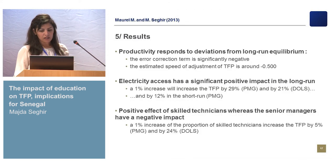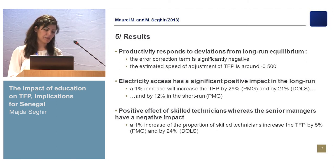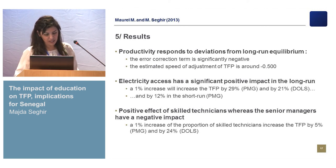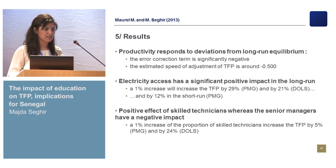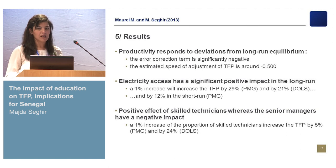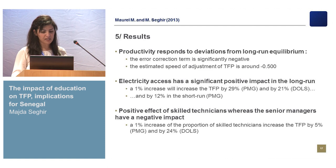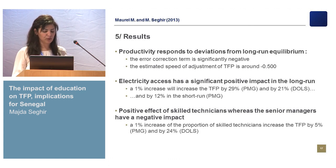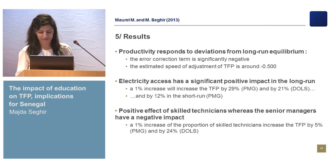We can conclude this presentation by saying that the main determinants of TFP identified by the African Development Bank — namely electricity access and education or human capital — have a positive effect in the long run. We can summarize by saying that the Senegalese economy needs to focus more on technical skills to match the needs of firms, and to improve the quality of electricity access in order to improve productivity in the industrial sector in the long run. Thank you.